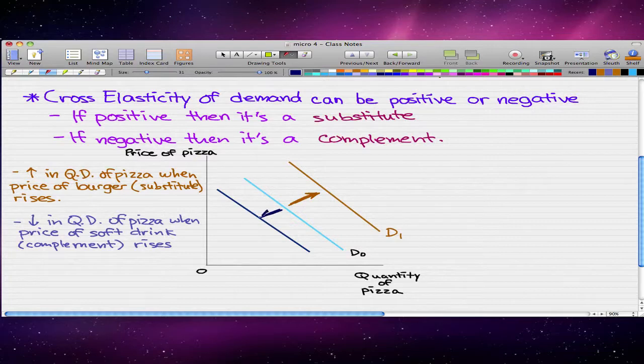In the case of a complement, there will be a decrease in quantity demanded of pizza when the price of a soft drink, which is a complement, rises, so D0 actually drops to this new point called D2.